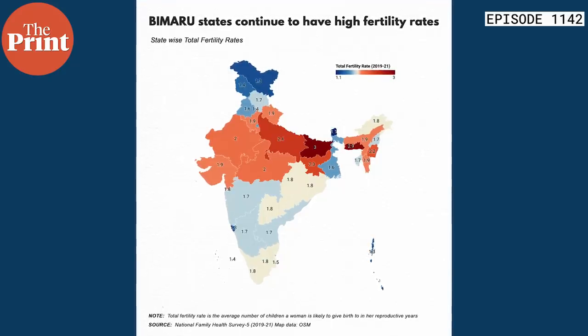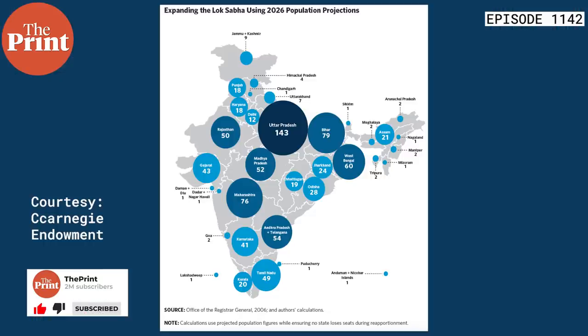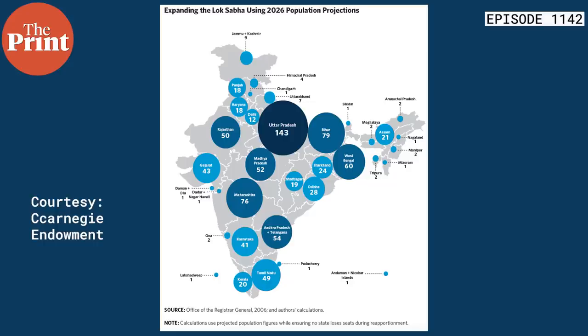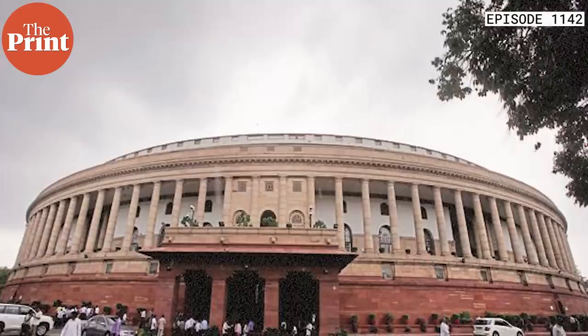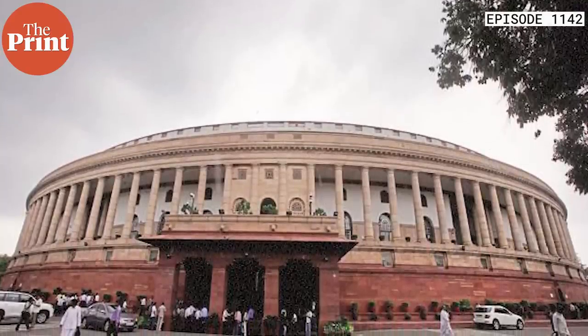Tamil Nadu's seats would go up by only 22.5% applying the same population principle in 2026, while UP goes up by 78.75% and Kerala doesn't go up at all. So that's got southern states very worried. That's why in this winter session of parliament, during discussion on supplementary grants, some southern MPs spoke up — prominently Kani Murray. My colleague Ishadrita Lahiri has written a detailed story on this issue, quoting many southern MPs including MB Somu of DMK and Kani Murray.